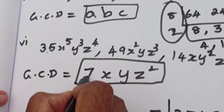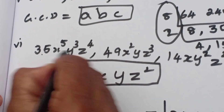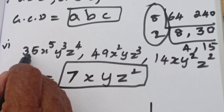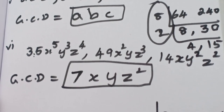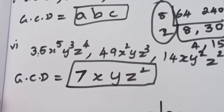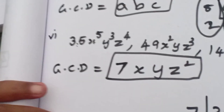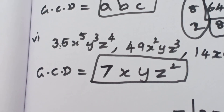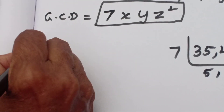But you should not forget to find the coefficient GCD. You have to put it together with the variable GCD. So the final answer is 7 x y z squared.